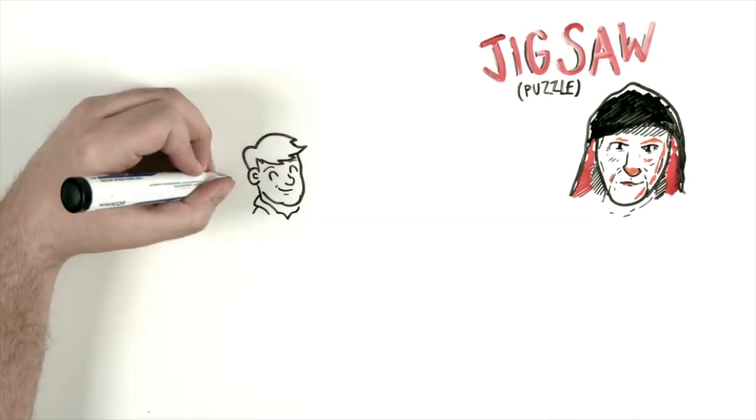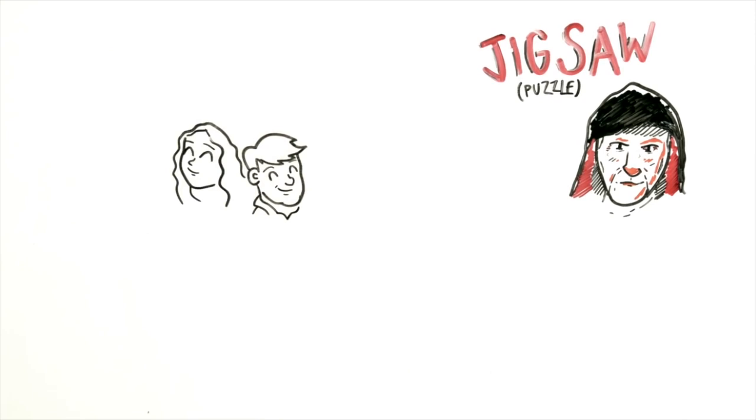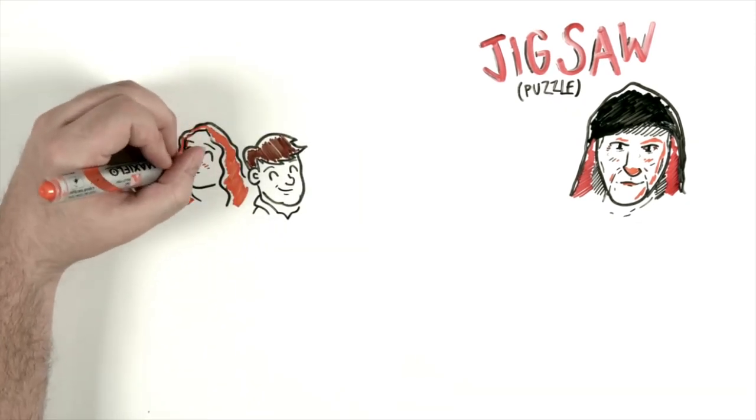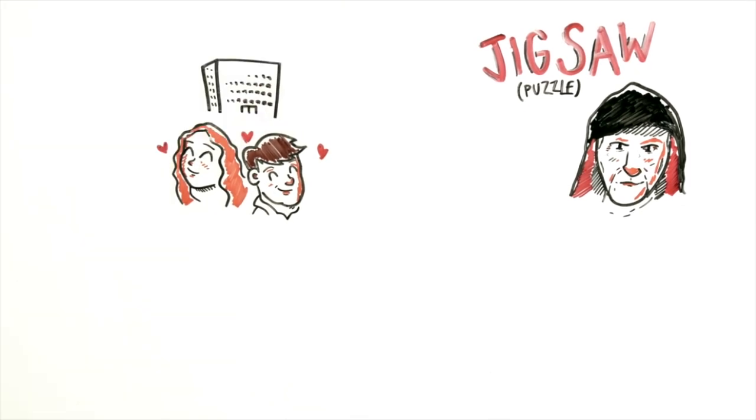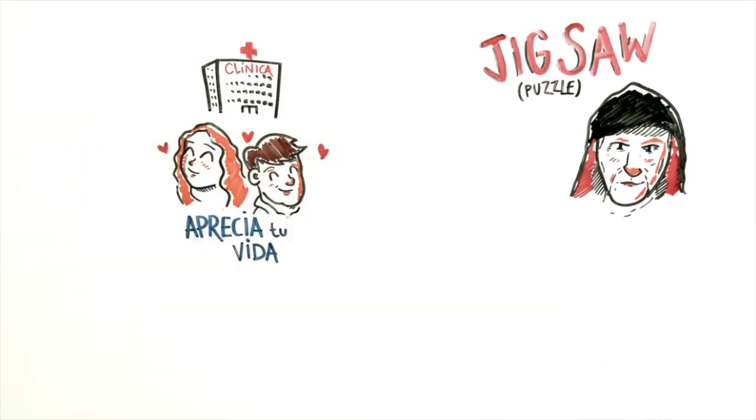However, before taking his victims to the limit, behind that cold face there's a normal person, a man called John Cramer. He was a successful civil engineer. His wife and him opened a recovery clinic under the motto cherish your life. But what happened to him?